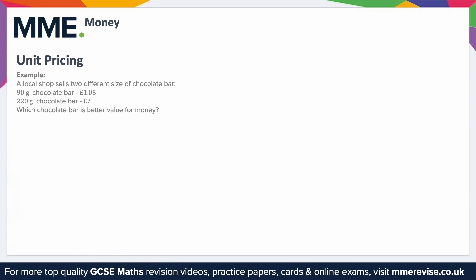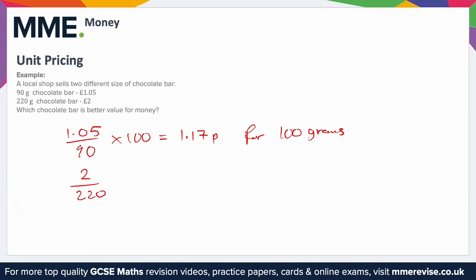To compare them, we want to find a common mass — let's use 100 grams. For the 90g bar, divide the cost by the mass and multiply by 100: £1.05 ÷ 90 × 100 gives 1.17p per 100g. For the 220g bar: £2.00 ÷ 220 × 100 gives 0.91p per 100g. We want the one that costs least for the same amount — 0.91p is cheaper than 1.17p per 100g.